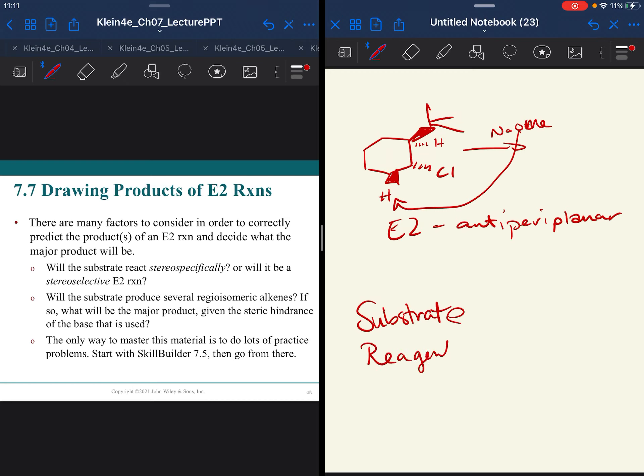You want to look at your reagent. Is it strong or weak? To be SN2 or E2, it needs to be strong. And then you need to think about your product. If you have a double bond, where is it going to be? What is the regiochemistry?